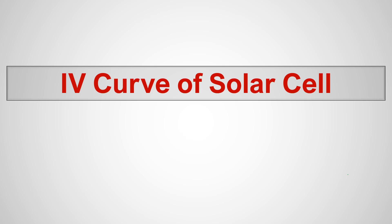Hello everyone, welcome to Engineering and Economy. Today we are going to discuss the IV curve of a solar cell. The IV curve is a voltage-current curve that basically tells us the output characteristics of solar panels.